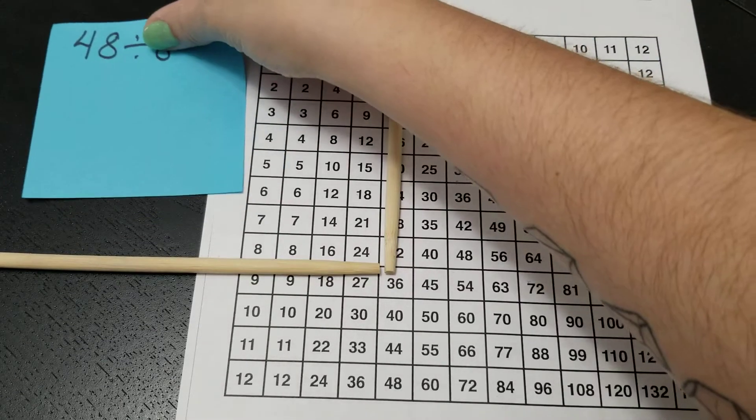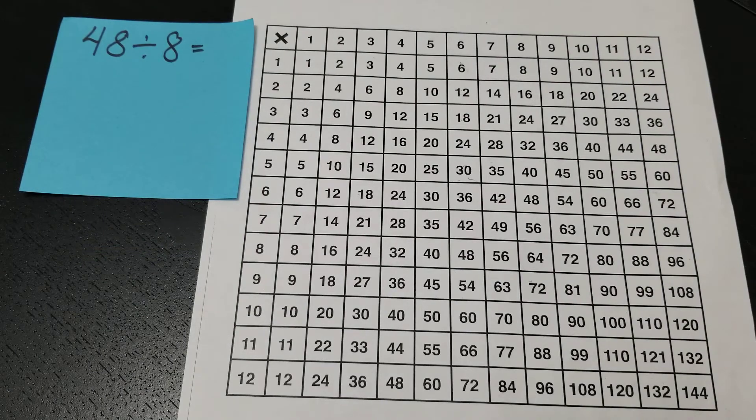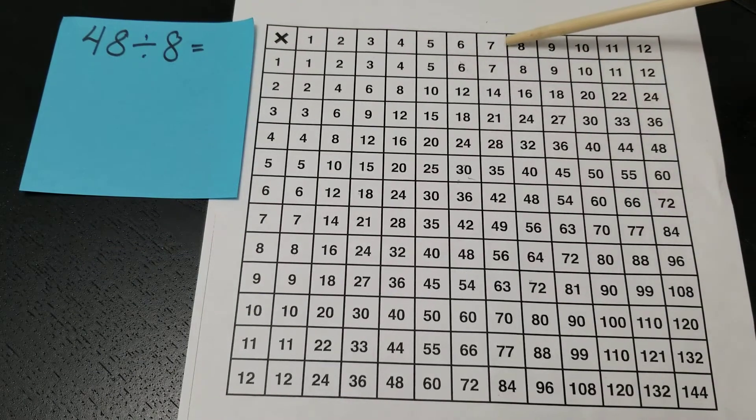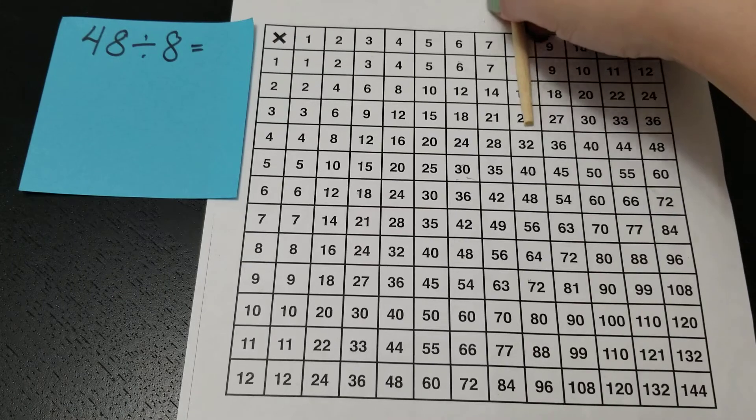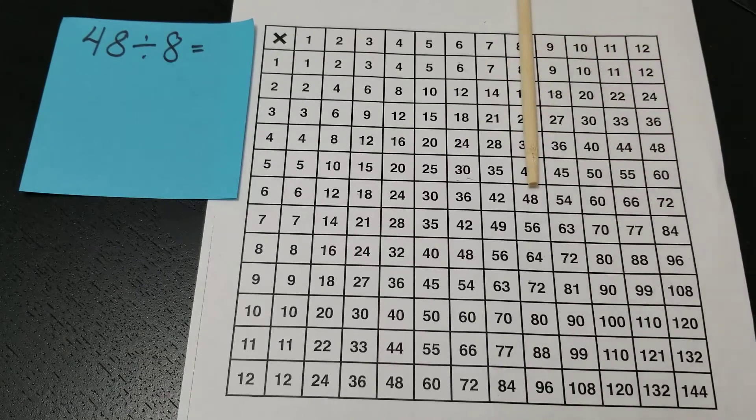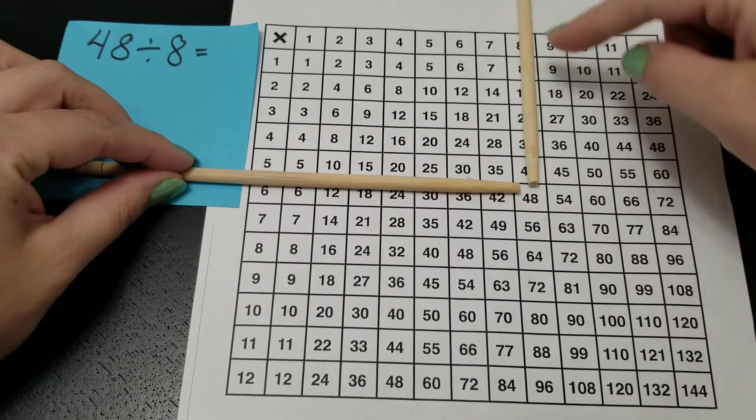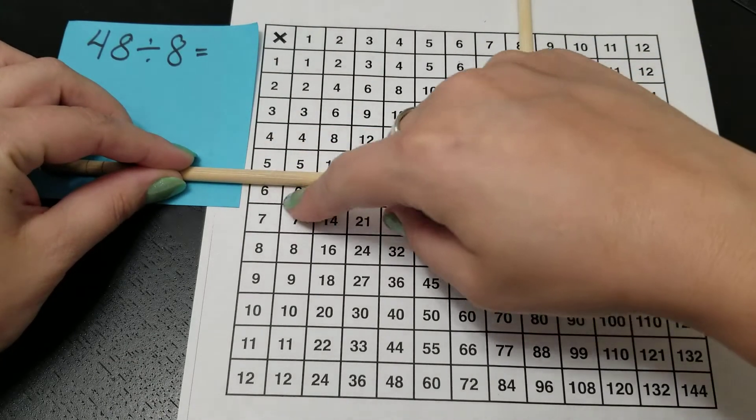One last one. 48 divided by 8. So I'm going to go across the top again until I find 8. Go straight down the 8 until I find 48. There it is. And I'm going to go straight across with my other one. 48 divided by 8 is 6.